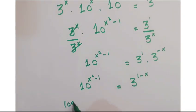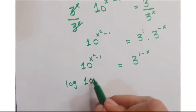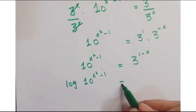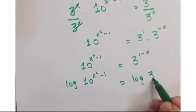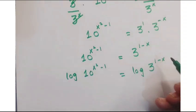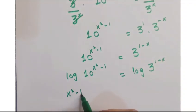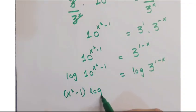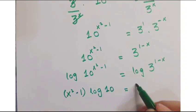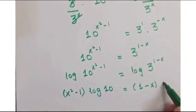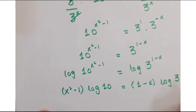Now, taking log on both sides. We get x squared minus 1 into log of 10 is equals to 1 minus x into log of 3.